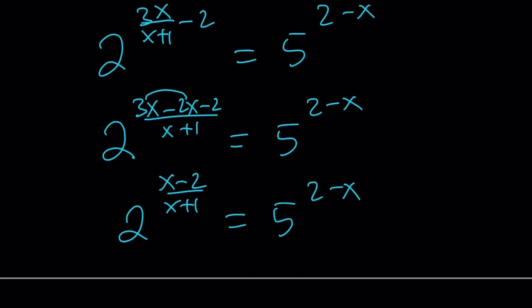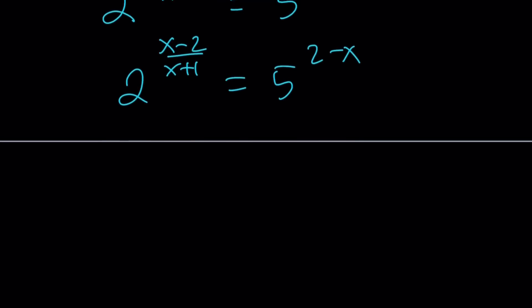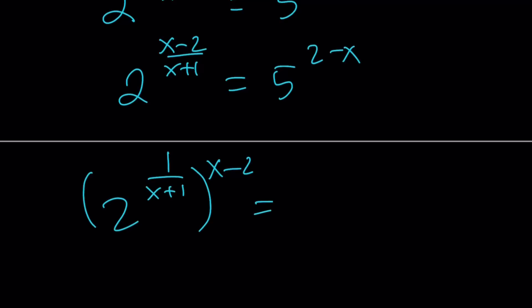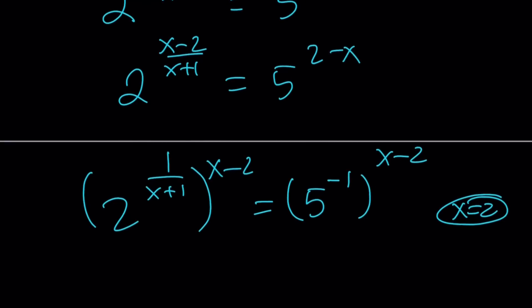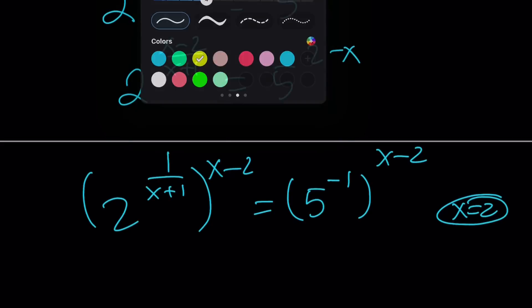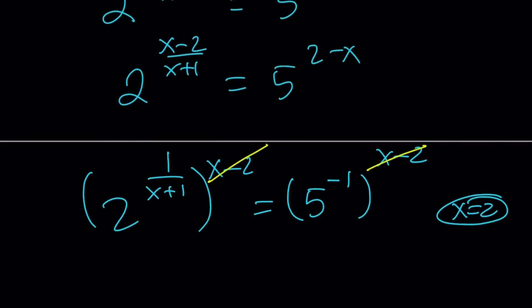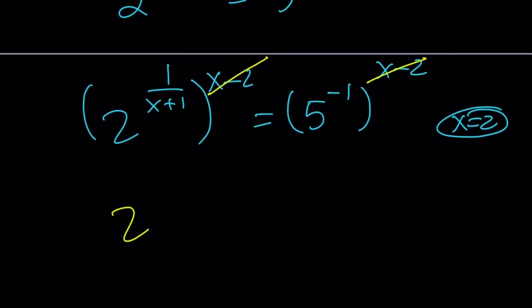Hopefully you can see that x equals 2 makes both exponents 0 — therefore it's a solution. I'm going to write the left side as 2 to the power 1/(x+1), raised to the power (x minus 2) — since exponents multiply. The right side becomes 5 to the power negative 1, raised to the power (x minus 2). If x equals 2, we get 2 to the 0 equals 5 to the 0, which works. If x does not equal 2, we can raise both sides to the power 1/(x minus 2) to get the other solution.